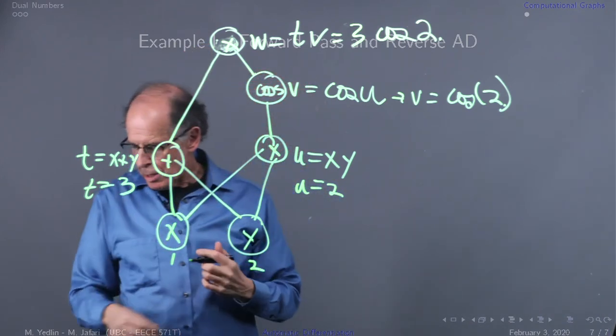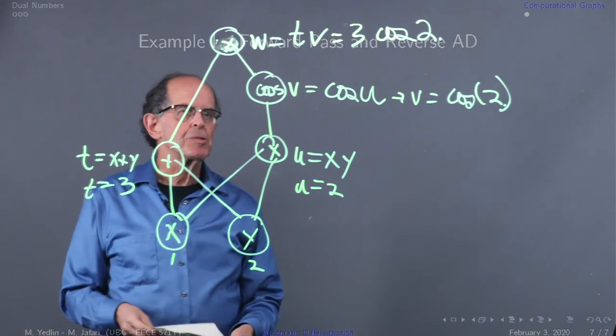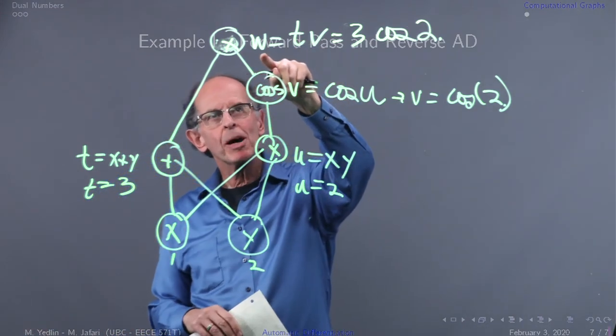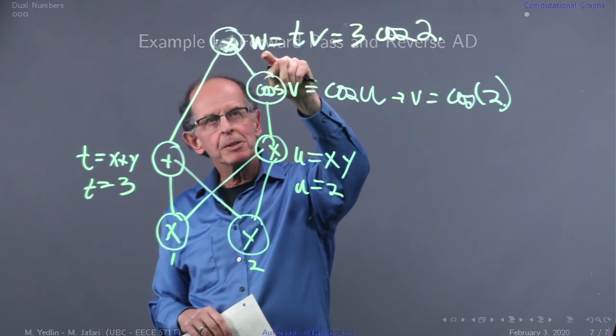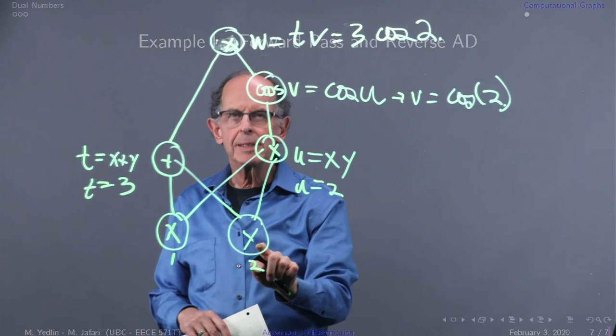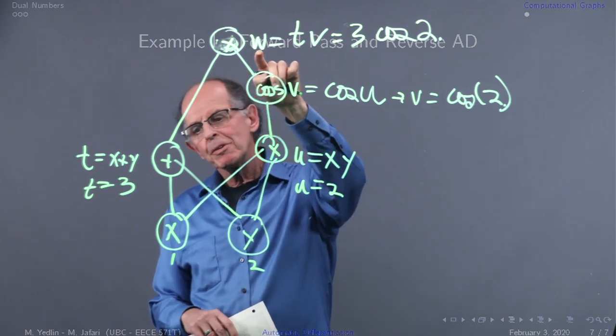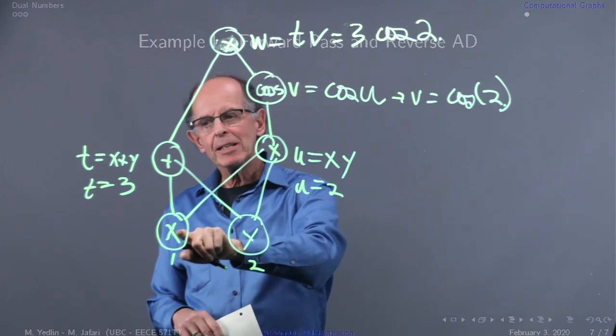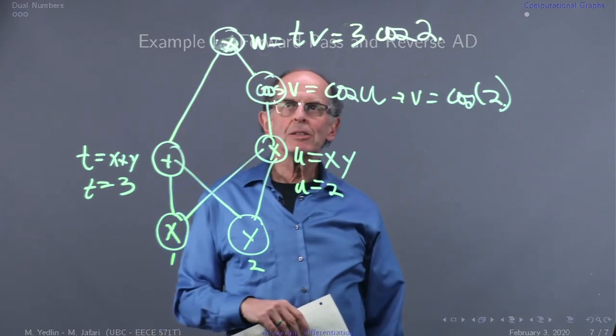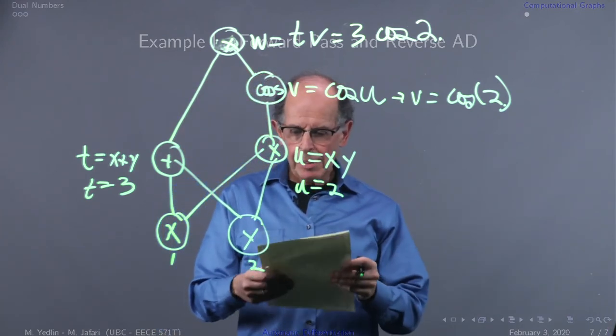Now we want to go backwards. When we go backwards, we want to compute w—the derivative of w when you change y a little bit, or the derivative of w when you change x a little bit. All the intermediate values are going to change.